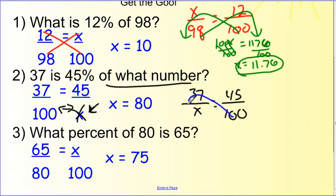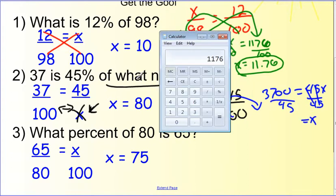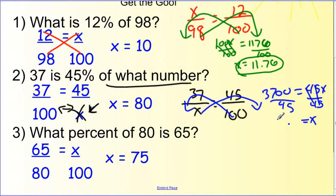Cross-multiply: we get 3700. Cross-multiply this way, we get 45x. Divide by 45 here and there. x equals 3700 divided by 45, which equals 82.2.